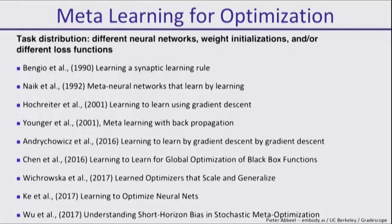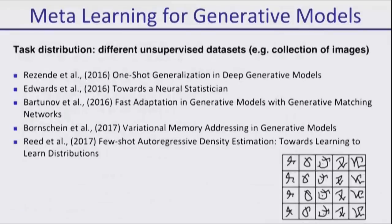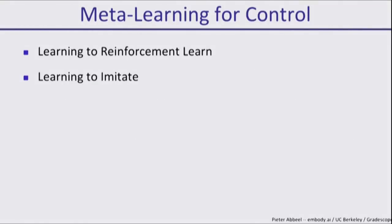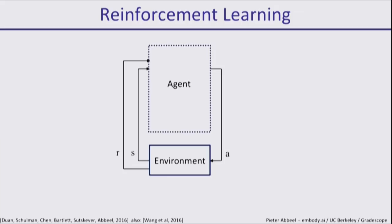Of course, there's a lot of meta-learning work already for optimization. Oriol summarized some of it for classification, for generative models. Here I want to focus on the control side of things. One way to learn to control is reinforcement learning, where you learn from your own trial and error. The other is imitation learning, where you learn from demonstrations.